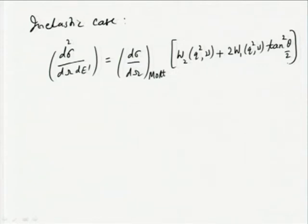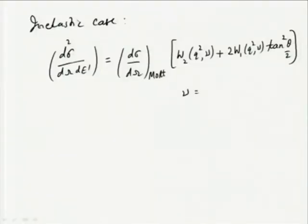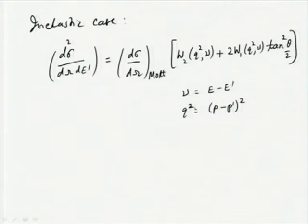The structure functions W₁ and W₂ are called structure functions, and there is no recoil factor considered because we are not dealing with elastic scattering of a final proton. In this inelastic scattering, ν is basically E − E', and Q² is similar to the earlier case (p − p')². In addition to Q², the quantity E − E' is another variable which can independently vary compared to Q².